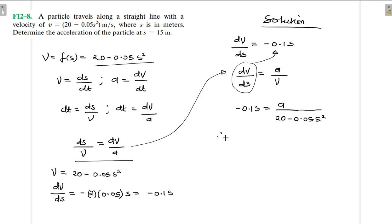Therefore our a, if made subject to the formula, is going to be equal to -0.1s times (20 - 0.05s²).